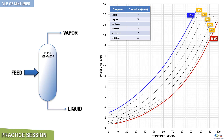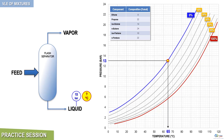The liquid bottom stream exits the flash separator at 13 bars and at its bubble point. The first question is: what is the temperature of this stream? Since the liquid mixture is at its bubble point, the percentage of vaporized mole is equal to 0%. Therefore, to determine its corresponding temperature at 13 bars, we need to draw a horizontal line at 13 bars. The intersection of the horizontal line with the bubble curve gives the operating temperature, which in our case is 65 degrees Celsius.